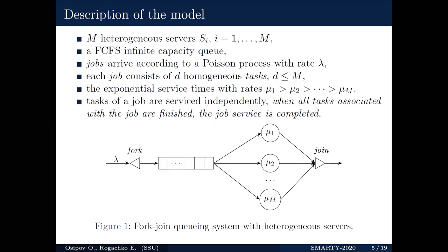Let us consider the queuing system which is depicted in the slide. As you can see, the system consists of M heterogeneous servers and infinite capacity queue. Jobs arrive at the system according to a Poisson process with rate lambda and each job consists of D homogeneous tasks. The service times have exponential distribution with the following rates, and as you can see, the rates are different and we order these rates in decreasing order. So it means the first server is the fastest server, but at the same time, the last one is the slowest.